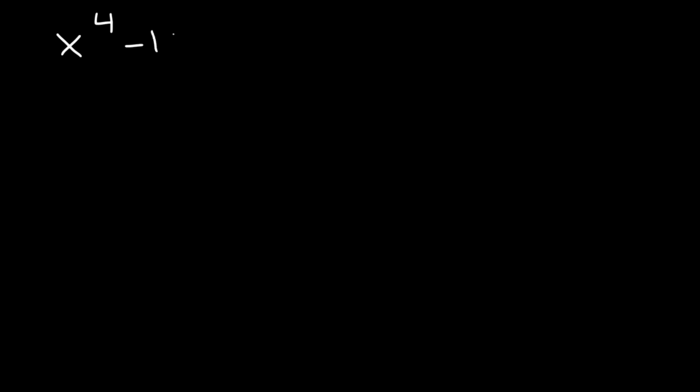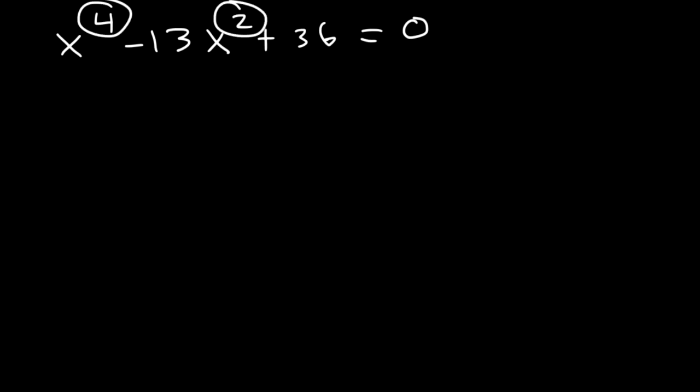In this lesson, we're going to talk about solving polynomial equations that are in quadratic form. Here's an example: x to the fourth minus 13x squared plus 36 is equal to zero. Notice that the exponent of the first term is twice the value of the middle term — when you see that, it's in quadratic form.